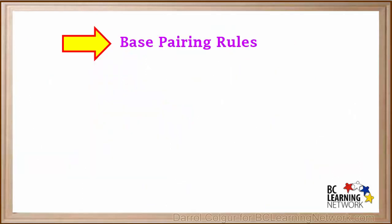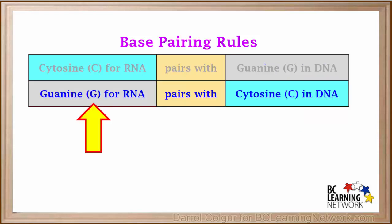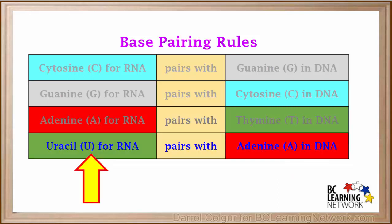At this point, it's good to review the base pairing rules for RNA and DNA nucleotides. Cytosine for RNA pairs with guanine in DNA, and guanine for RNA pairs with cytosine in DNA. Also adenine for RNA pairs with thymine in DNA. Remember that RNA contains the base uracil rather than thymine, so uracil in RNA pairs with adenine in DNA.